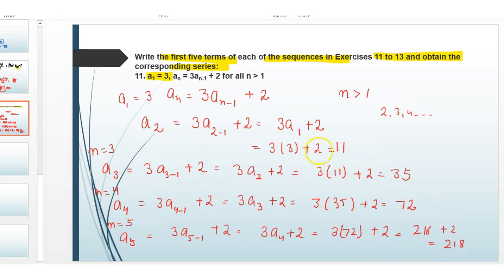So the sequence is: first term is 3, second is 11, third term is 35, fourth term is 72, and the fifth term is 218. Thank you.